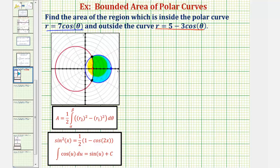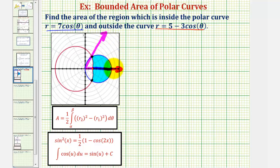However, because the area is symmetrical across the x or polar axis, we can actually use zero radians as our lower limit of integration, which would be here, and then stop integrating here, and then as long as we find this area and double it, we can find the total area. So we can almost tell from the graph, this angle looks like it will be 60 degrees, or pi over three radians.